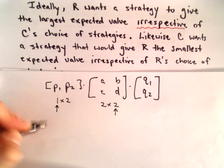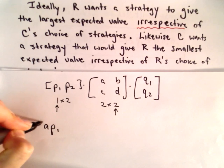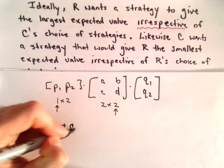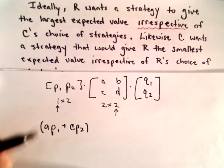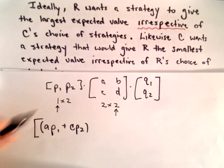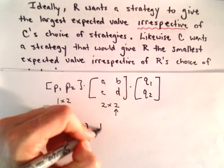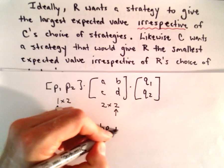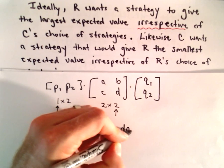So again, we're doing rows by columns. So we would have A times P1 plus C times P2. That would be our first entry. And then we would have B times P1 plus D times P2.